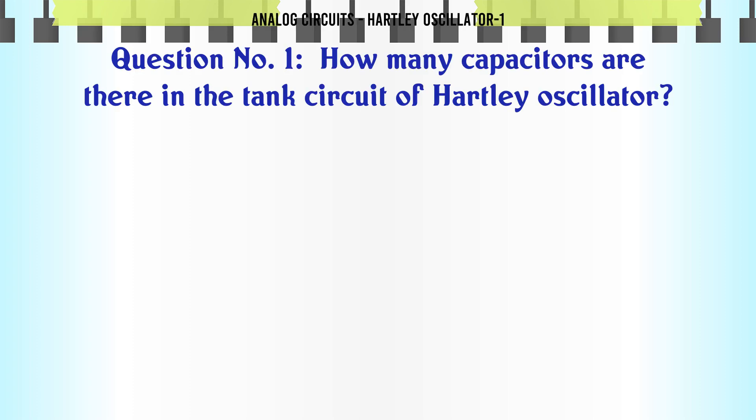How many capacitors are there in the tank circuit of Hartley Oscillator? A: 1, B: 2, C: 3, D: 0. The correct answer is 1.